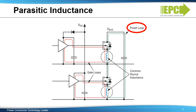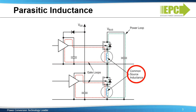The high-frequency power loop is formed by the two power switching devices along with the high-frequency bus capacitor. The gate drive loop is formed by the gate driver, power device, and high-frequency gate drive capacitor. The common source inductance is defined by the part of the loop inductance that is common to both the gate loop and the power loop.